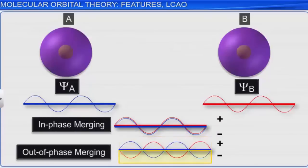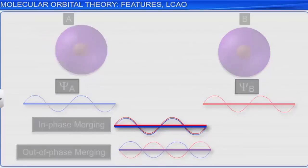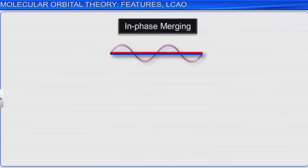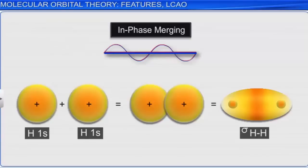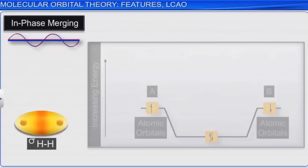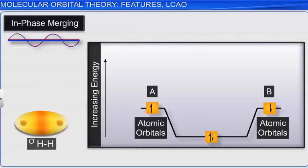When the two electron waves are in phase, they form the bonding molecular orbital. Here, the electron density is between the two nuclei; the electrons tend to hold the nuclei together, thus stabilizing the molecule. Therefore, a bonding molecular orbital always possesses lower energy than either of the atomic orbitals that combined to form it.